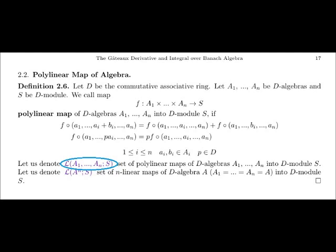Let us denote L(A1, ..., AN, S) the set of polylinear maps of the algebras A1, ..., AN into the module S. Let us denote L(A, N, S) the set of N-linear maps of the algebra A into the module S. In this case, for any i from 1 to N, A_i equals A.